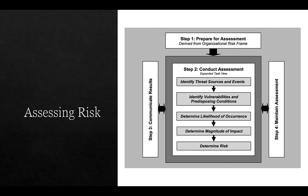The risk appetite may also come from regulatory and statutory frameworks — if you operate in a heavily regulated industry such as finance or healthcare, your level of tolerance for risk will be lower. You then conduct an assessment: identify assets, identify the threat sources and events, identify the vulnerabilities and predisposing conditions, determine the likelihood of occurrence, determine the magnitude of impact, and determine the risk. Step three involves communicating those results, and step four is to maintain the assessment.